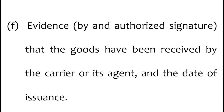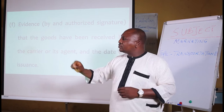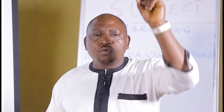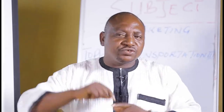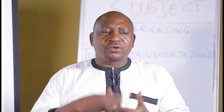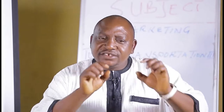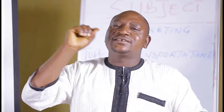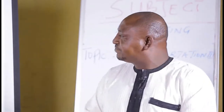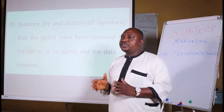E: evidence by an authorized signature. Before you deliver goods, there must be evidence showing that this is an authorized product which will be taken from one point to another. The goods have been received by the carrier. When you go along with these delivery notes on the air bill, there must be a letter of acknowledgement from the recipient, acknowledging that the goods have been deposited or have reached their final destination through the agent — that is the carrier. And the date of issuance must be written on it properly.